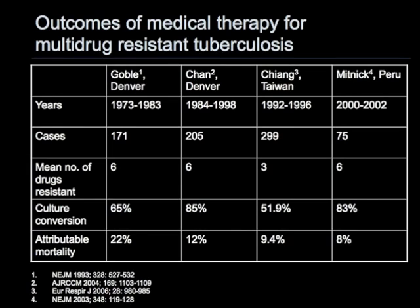Outcomes of medical therapy for multidrug resistant tuberculosis can be reasonably good and can approach 85% treatment success in selected cases with close monitoring and aggressive treatment, as shown on this slide summarizing a variety of treatment series for MDR-TB. In other series, however, treatment outcomes have not been as good and mortality rates have been appreciable.